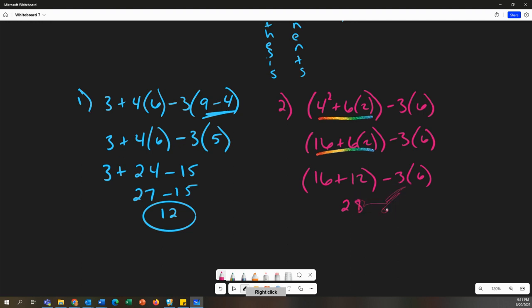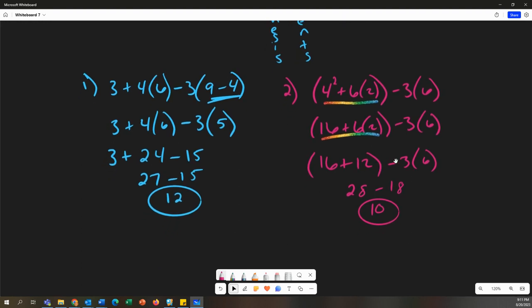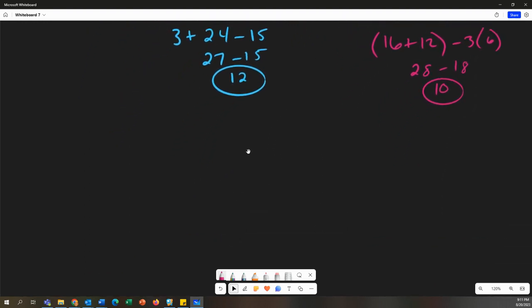And I'm going to go ahead and multiply that other side. 3 times 6 would be 18. 28 minus 18 is 10. Okay, so it's okay to do more than one step at a time as long as you continue staying in order. Let's look at another one.